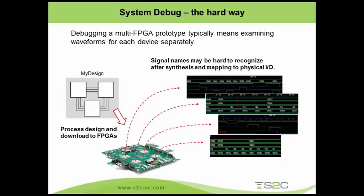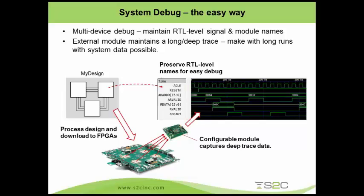Another problem: most tools use the internal memory of the FPGA to store waveforms, which means you have a very limited number of trace steps. Often that's not enough to reach the point of interest, and you end up fighting memory space with your own design logic. The solution is to consolidate the waveforms from multiple FPGAs into one place and provide external storage. Deep trace storage is very important, because the most critical bugs in FPGA prototyping usually require many, many cycles to appear. With only a short trace window, you're very likely to miss those bugs.